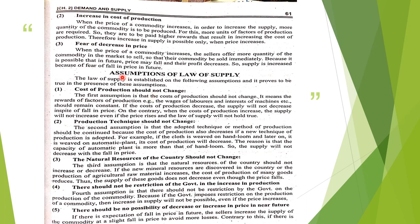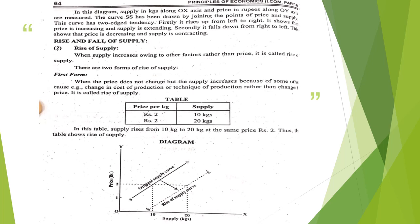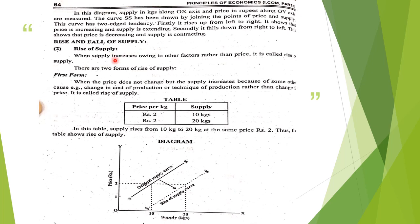Assumptions کے case میں یہ چیزیں change ہو جائیں تو قانون apply نہیں ہوگا، اس لئے ہم یہ کہتے ہیں یہ fix رہیں گی۔ اب rise اور fall میں: in case of rise and fall, we hold the price of the commodity the same and see that due to other factors — cost of production, wages, interest rate, technology — supply will change. یعنی شے کی اپنی قیمت میں تبدیلی نہ ہو، بلکہ دوسری چیزوں میں تبدیلی کی وجہ سے supply میں تبدیلی ہو — جیسے cost of production، technology، یا raw material کی prices — تب ہم اسے rise یا fall کہتے ہیں۔